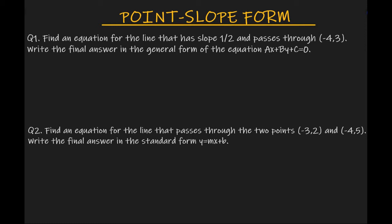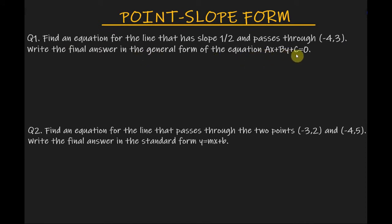Now let's work on some problems. Find an equation for the line that has slope 1/2 and passes through the given point. Write the final answer in the general form of the equation ax plus by plus c equals 0.